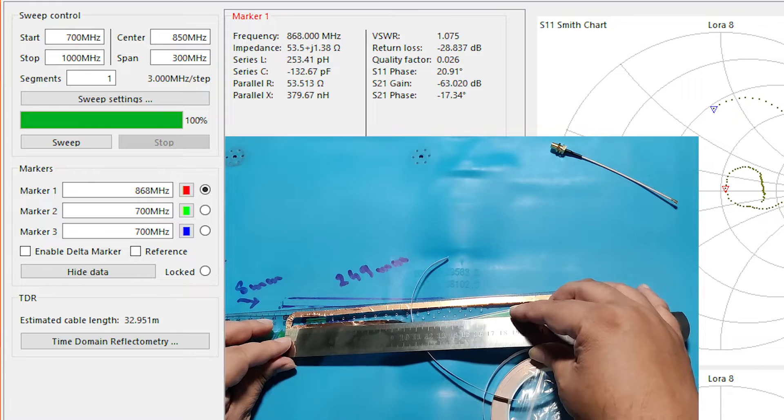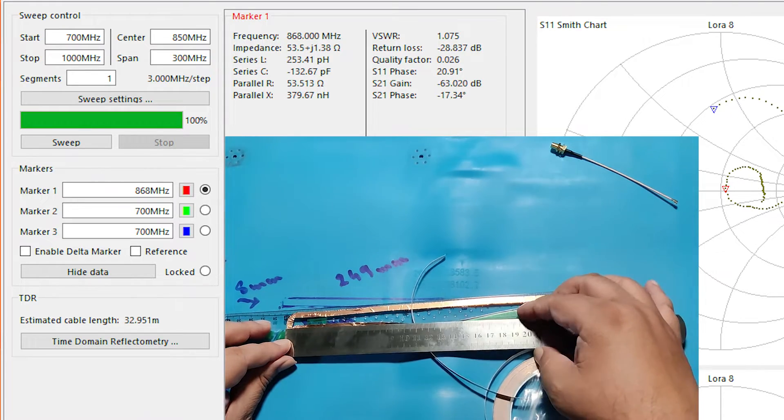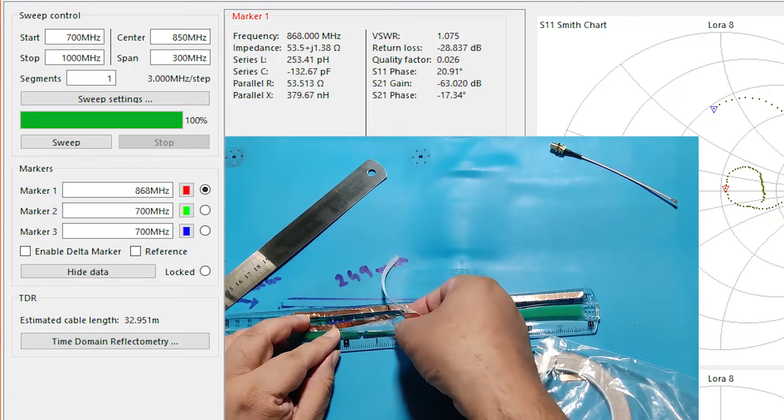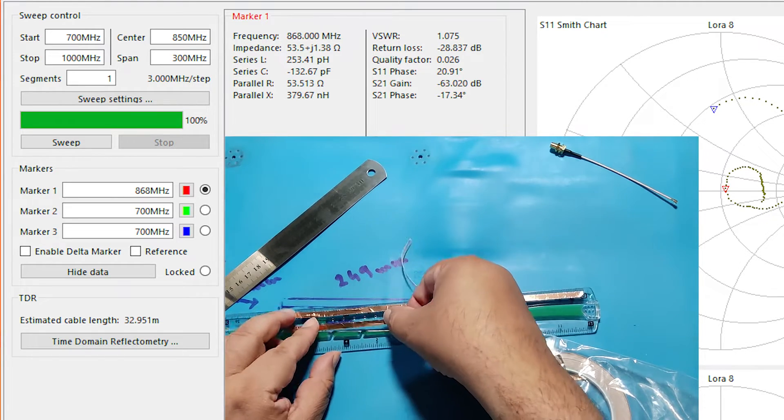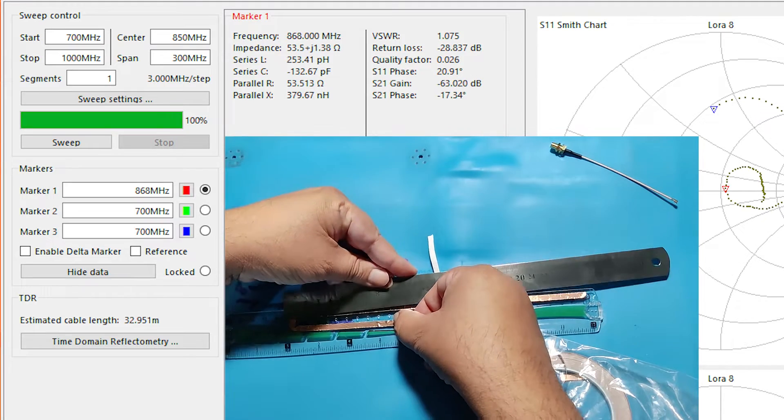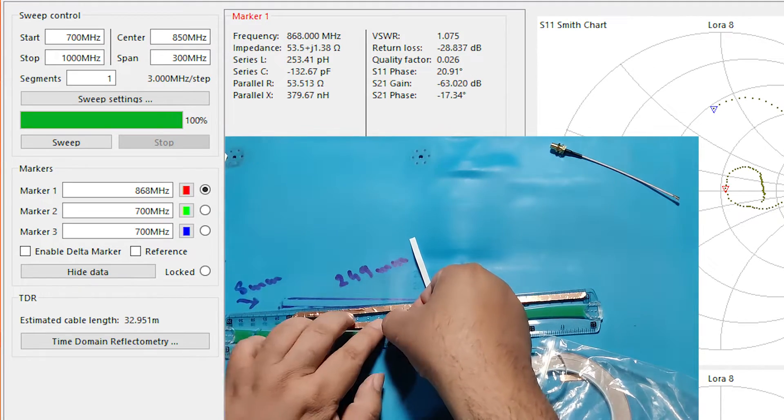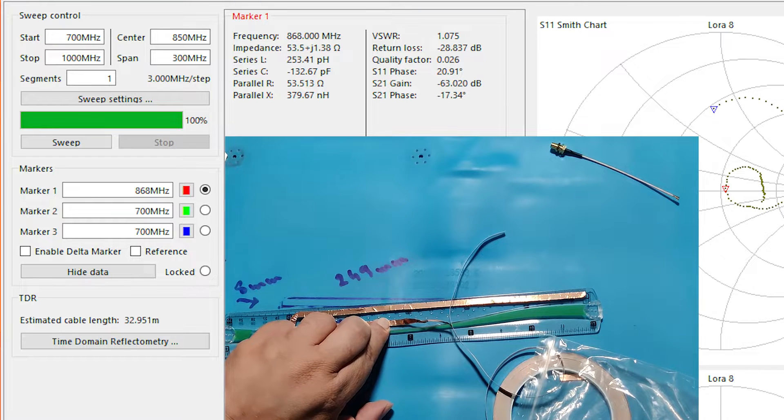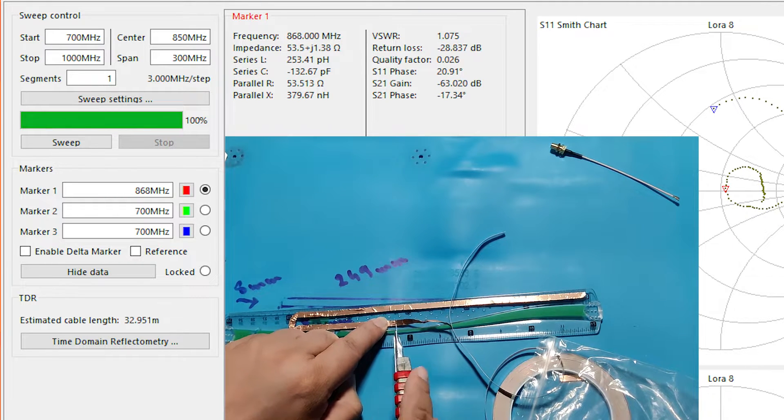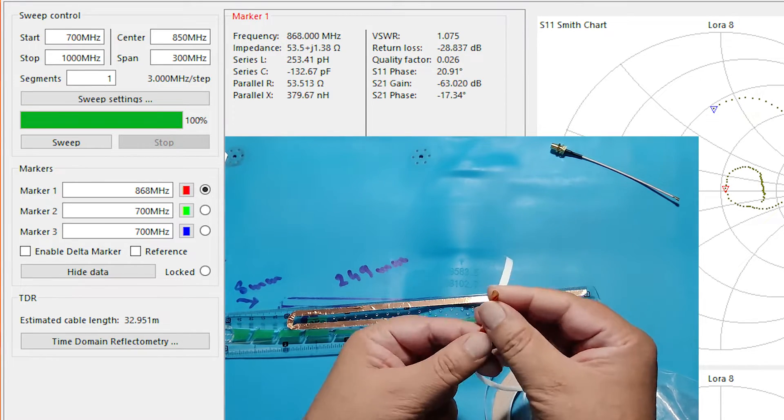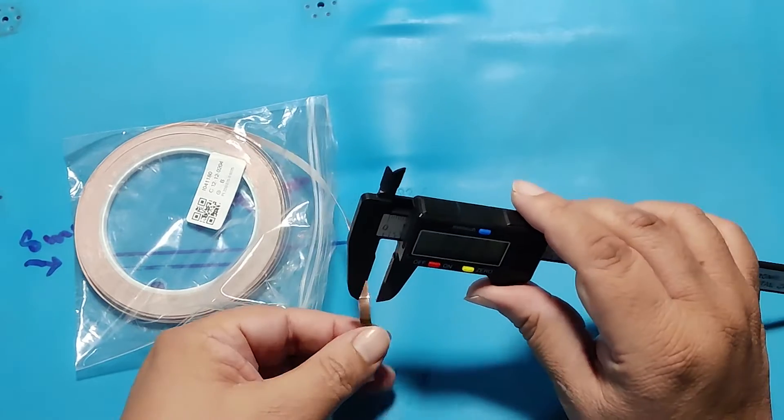Today we are going to build an 868 MHz J-POL antenna for Mesh-tastic use. It is very simple and easy to build. For this video I want everyone who wants to build a J-POL antenna to be able to build it without any problems by watching this video. Let's start.